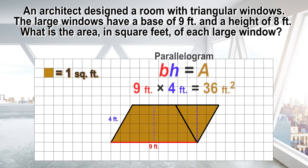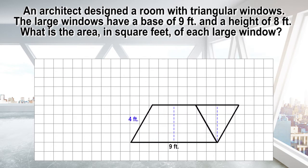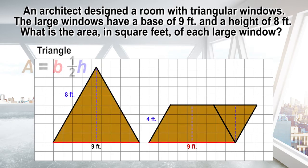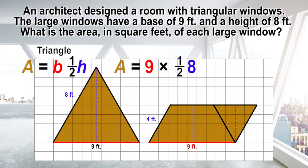What formula could be generated using the base and height of the parallelogram to calculate the area of the triangle? It would be area equals base times one-half height, because the base remains the same when recomposing the triangle into a parallelogram, but the height is half the height of the original triangle. Area equals 9 times one-half of 8, which equals 9 times 4, which equals 36 square feet.